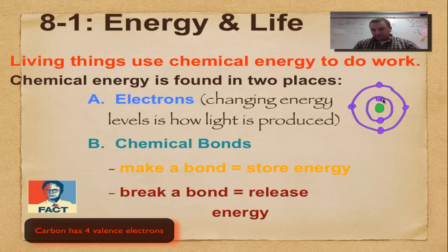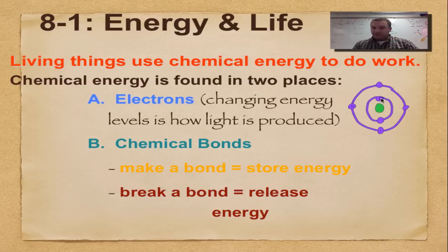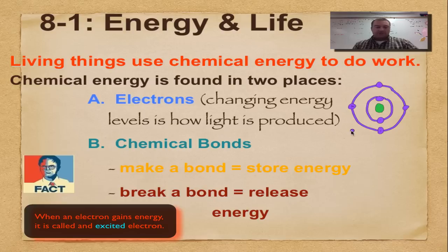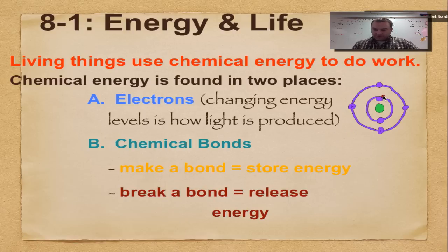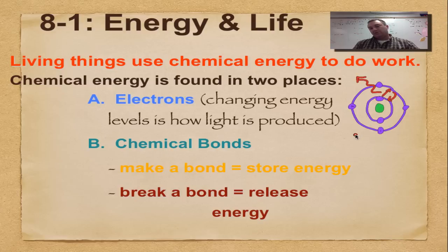Now this electron can go from this level to that level - it can hop up and down. When it gains energy it's going to pop up, but that's unstable. It doesn't like to be in that level, so it may pop down. When it pops down it can release light. So if this goes up and then it falls back down, it's going to release light. Any light bulb that you have, you have electrons going up and down, up and down. And every time they go down, light is shot out.